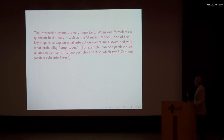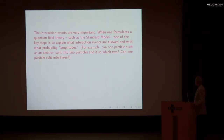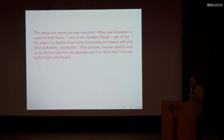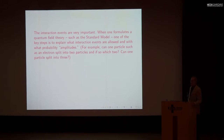For example, can one particle such as an electron split into two particles? And if so, which two particles is the electron allowed to split into? Can one particle split into three? So when you invent a quantum field theory, you say what particles you want to study, but you also say what interaction events are going to be allowed and at what rates — or technically what amplitudes — they happen.